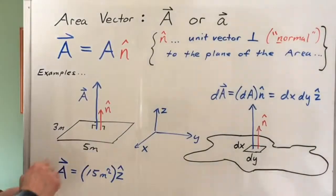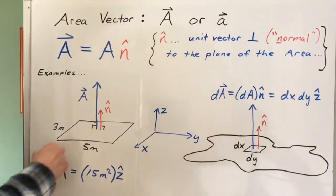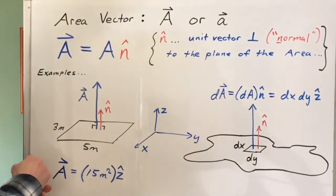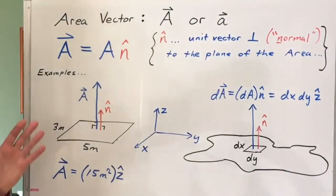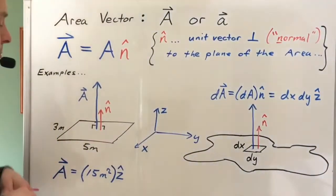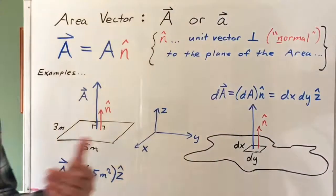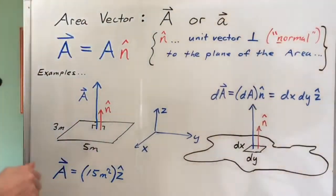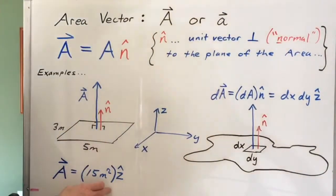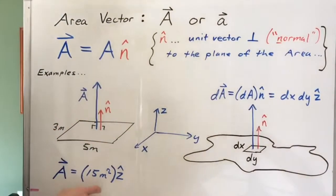Imagine I've got an area in the xy plane, three meters along the x direction, five meters along the y direction. Now imagine I want to represent this area with some sort of vector. The magnitude of the area vector will just be what we normally call the area, so in this case 15 square meters.